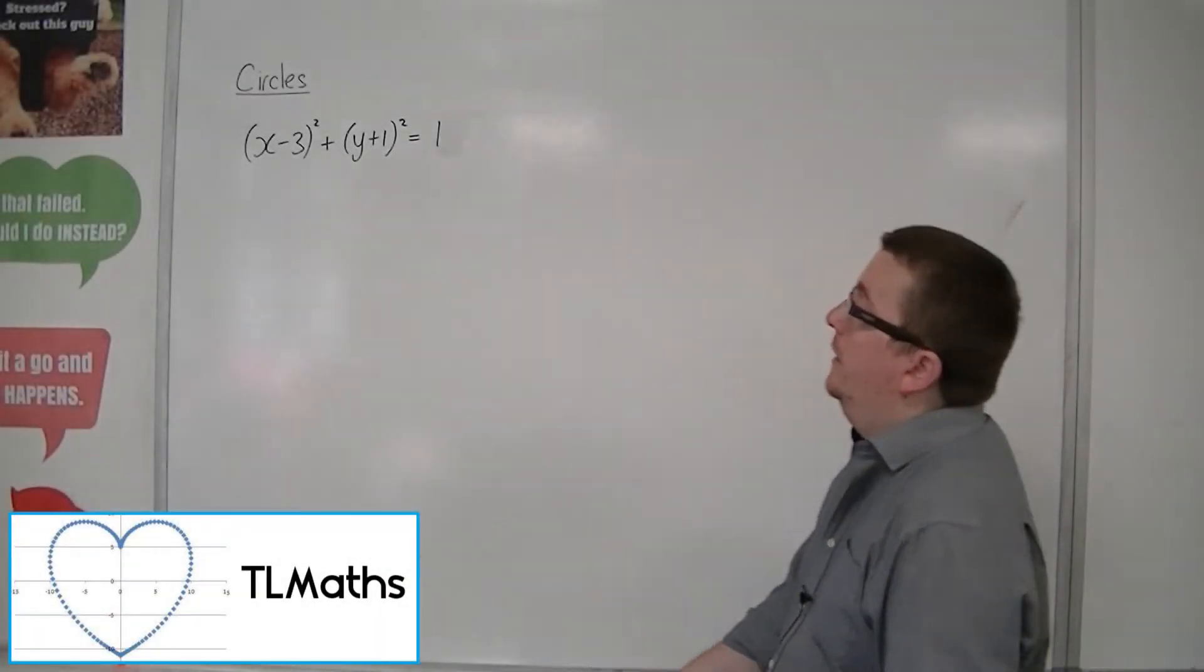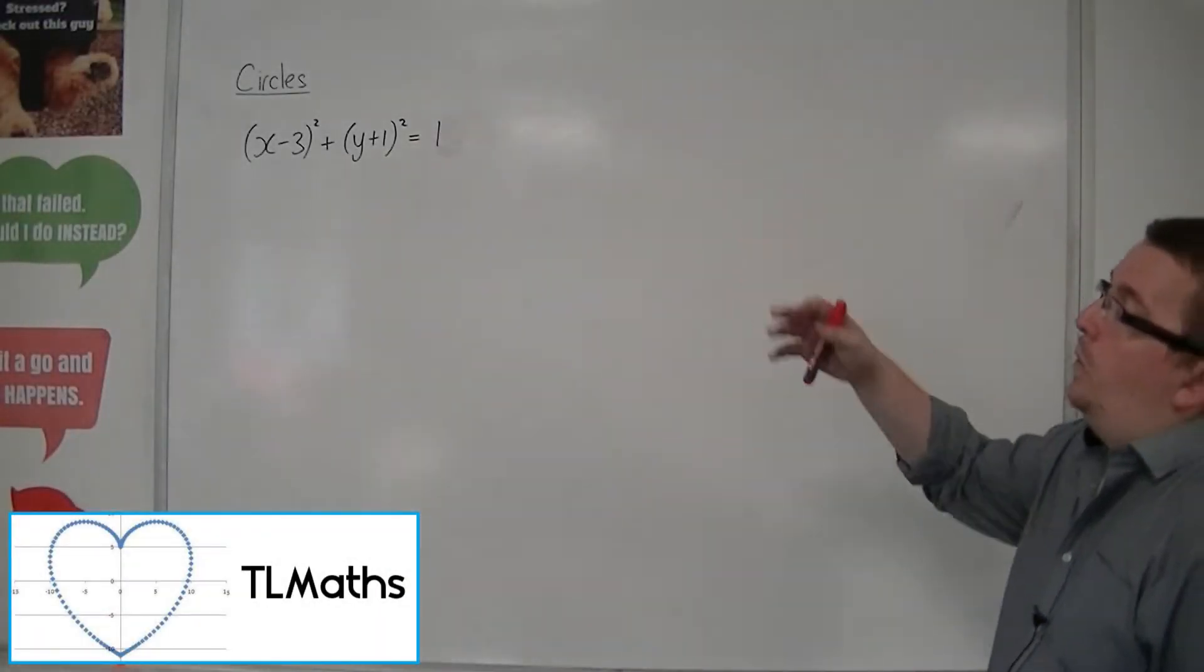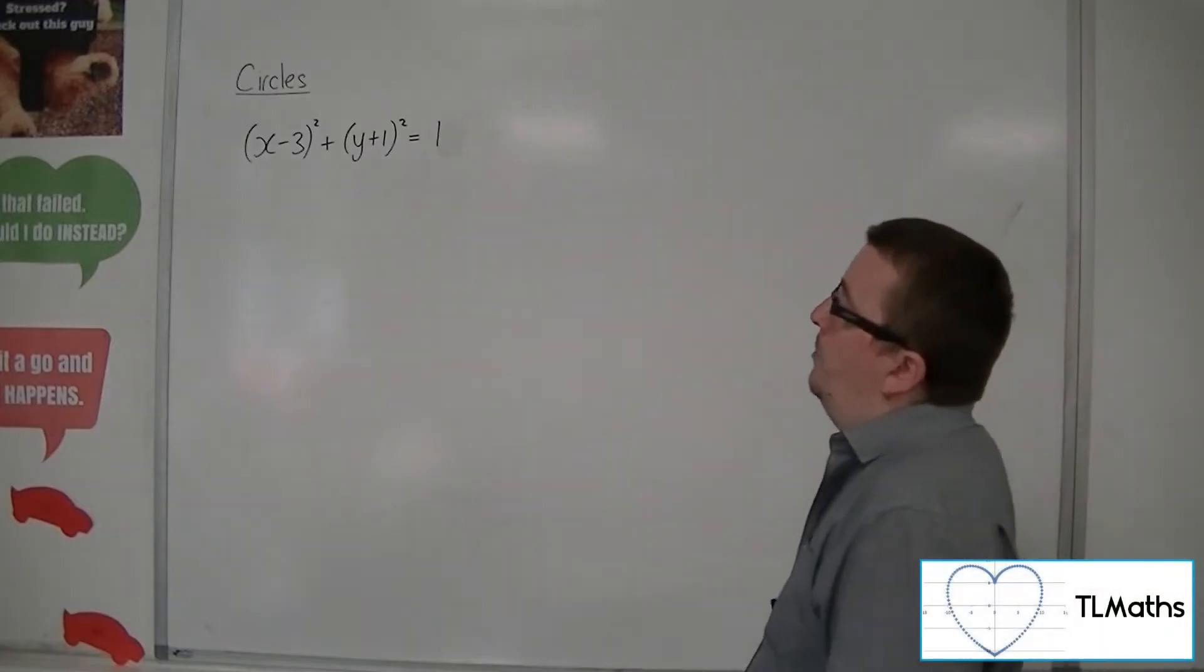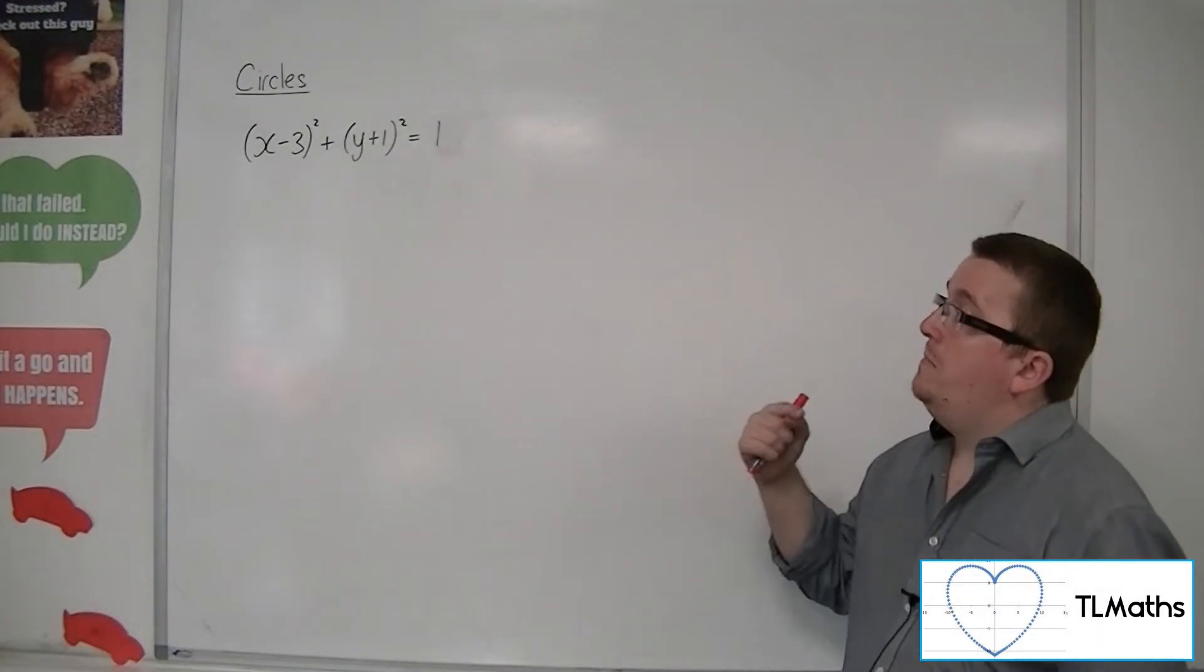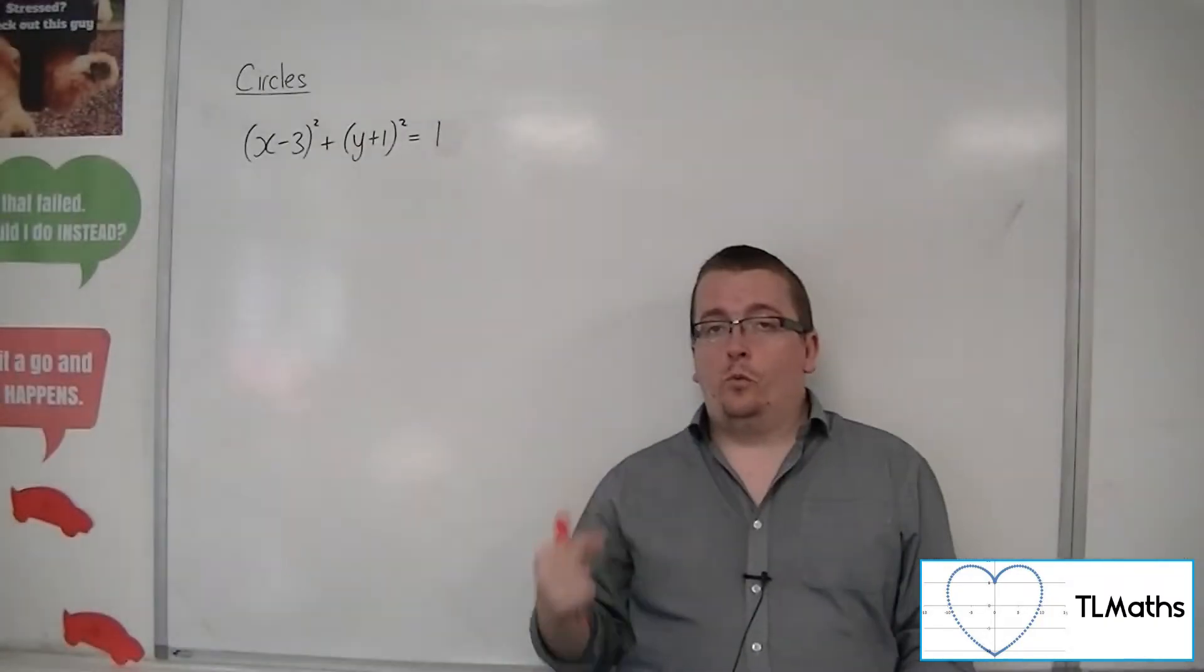Let's take an equation of a circle. Here's one: x minus 3 squared plus y plus 1 squared equals 1. This is the circle centered at 3, minus 1 with radius 1.